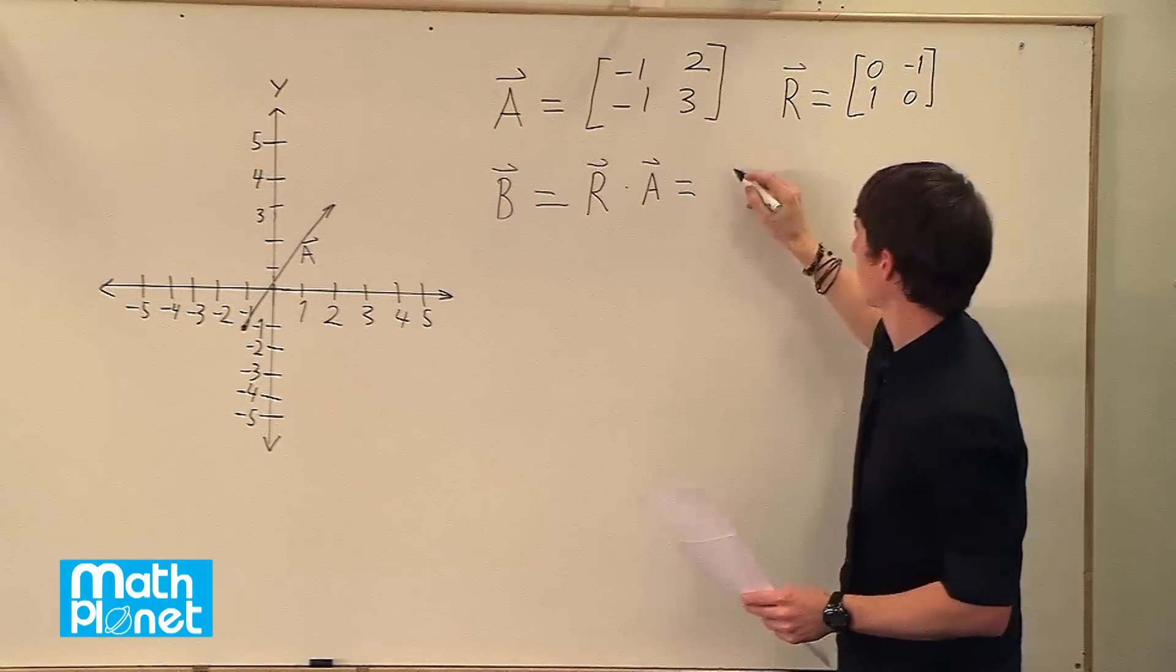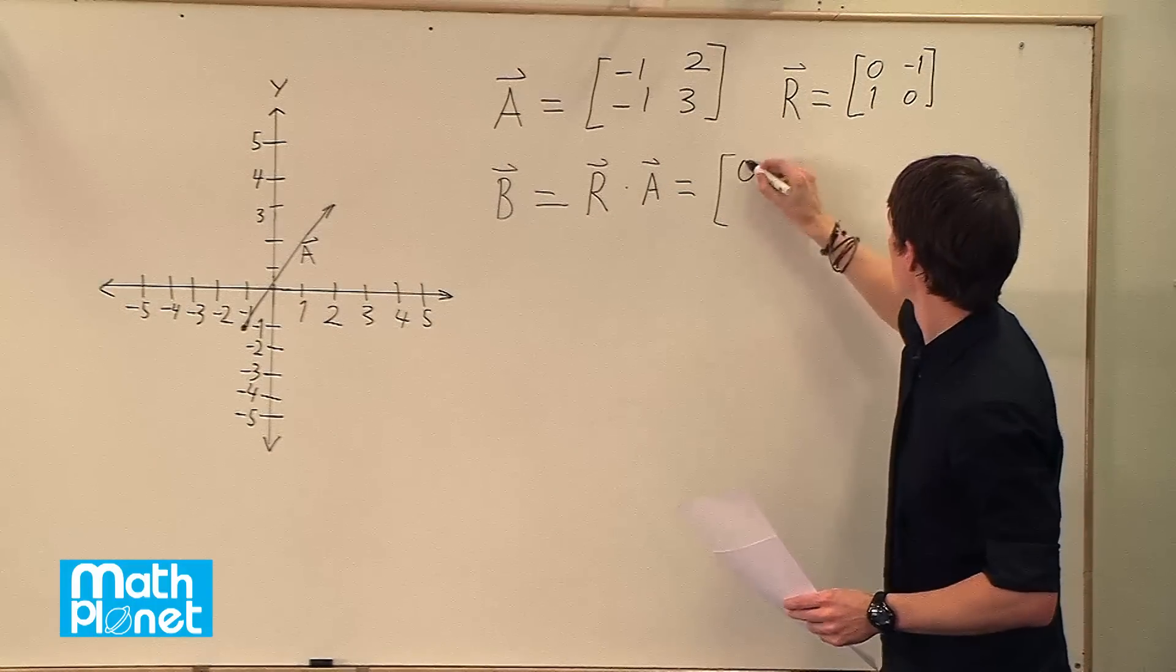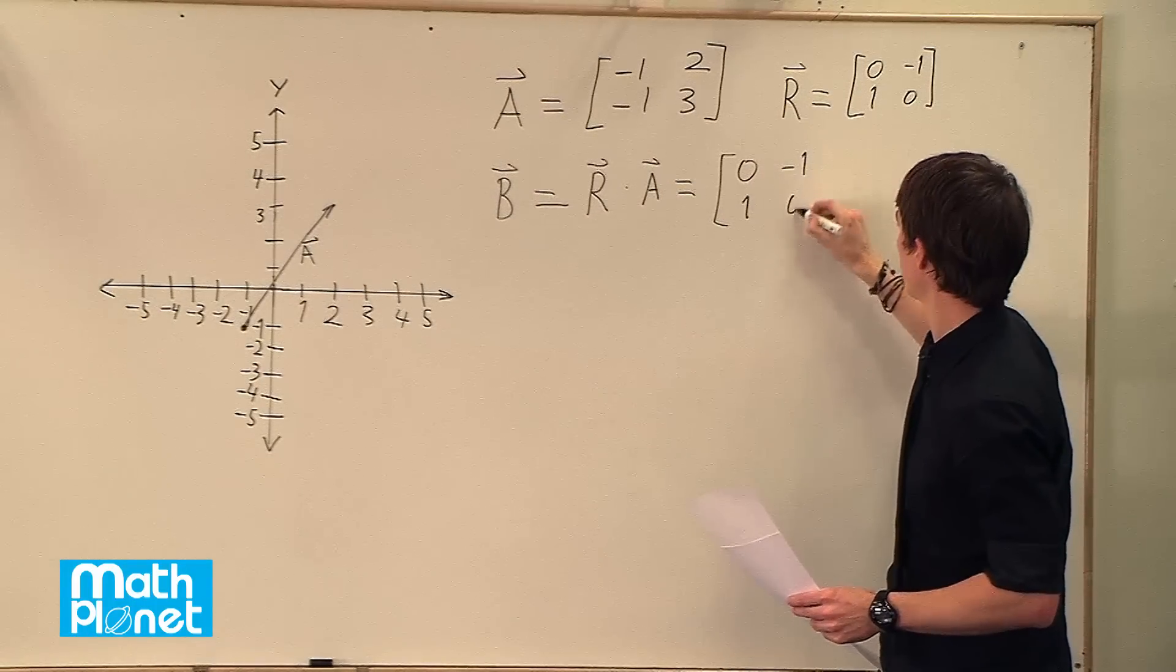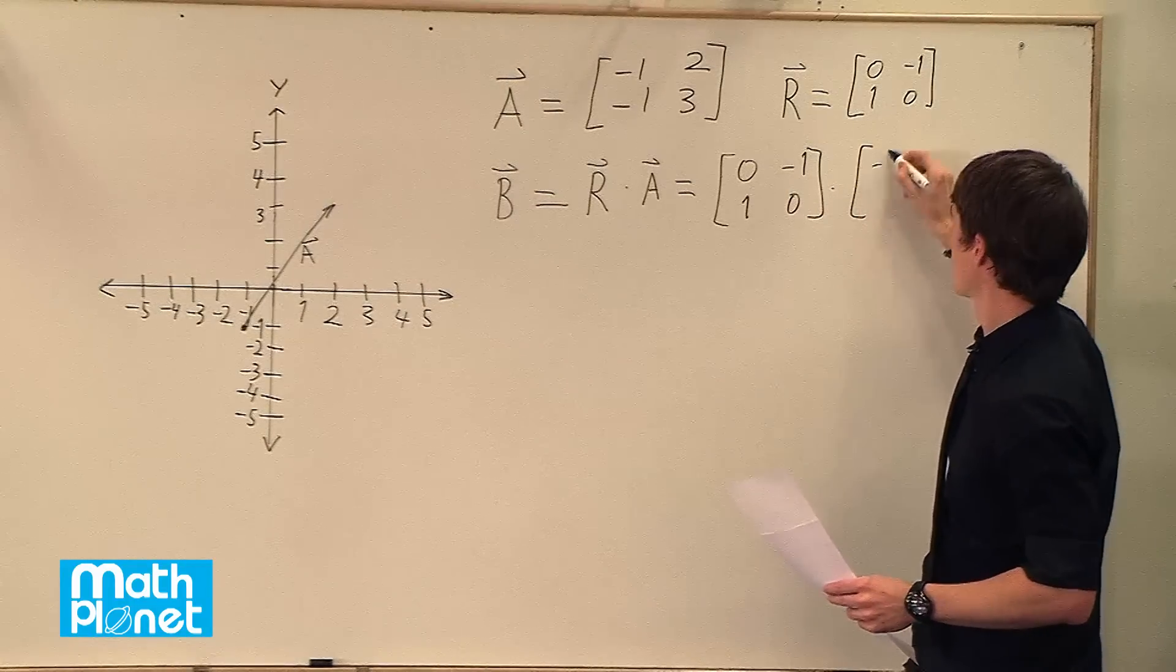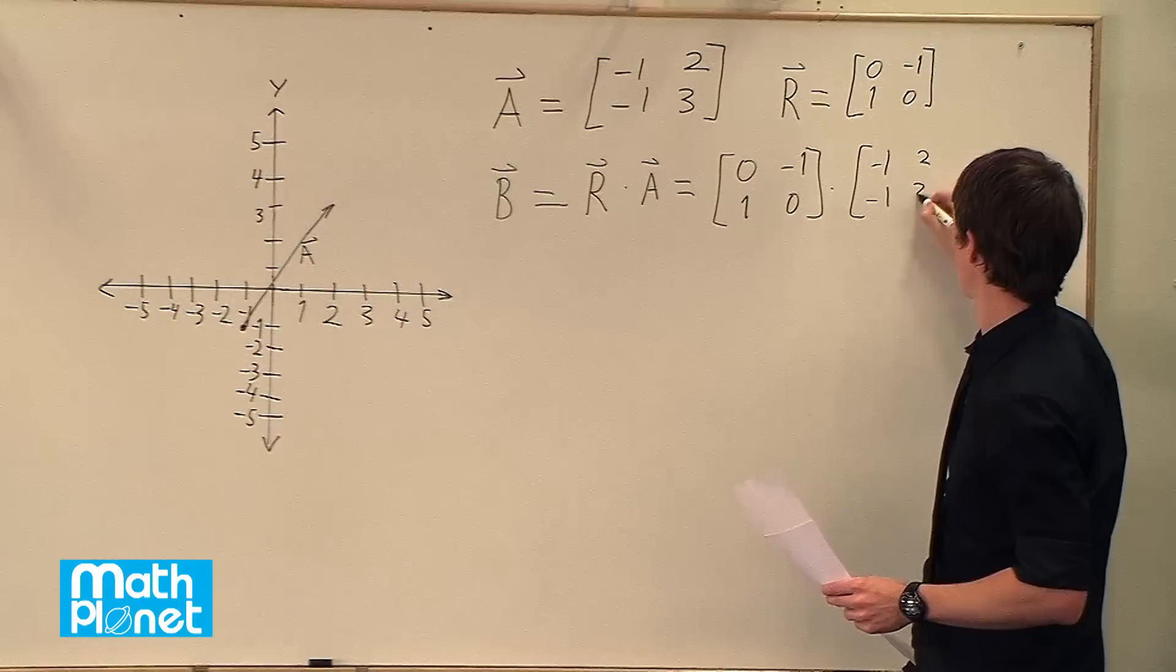So what that looks like is 0, 1, negative 1, 0, times negative 1, negative 1, 2, 3.